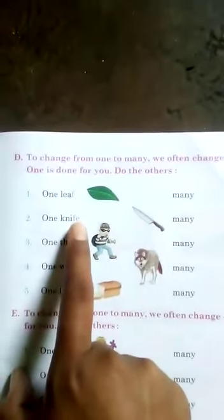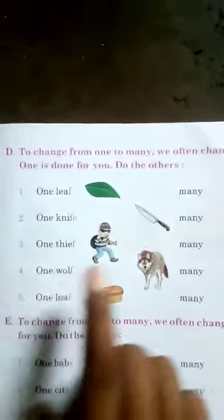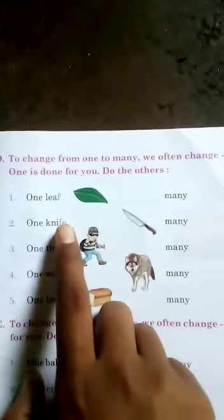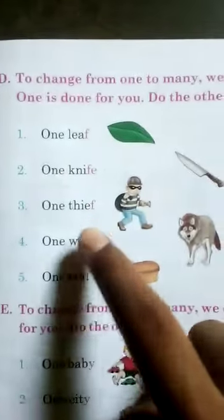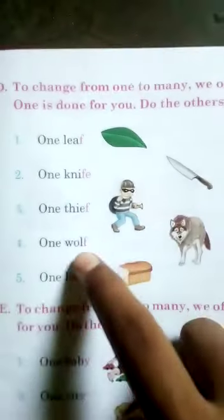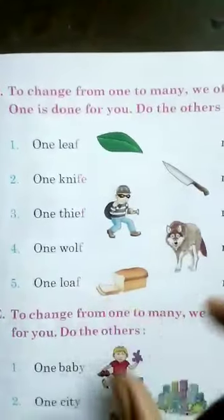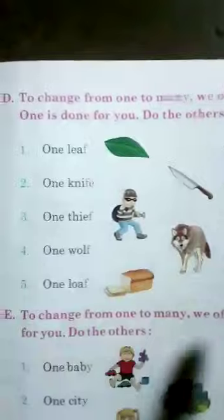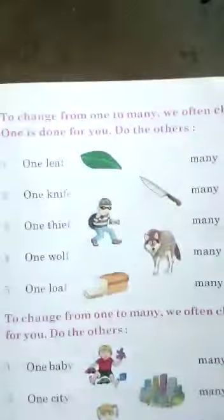The second one is also done for you: one knife. The last letters are FE, so you remove them and add only VES. So it will be K-N-I-VES. You can see those words where the last letter is F — remove it and add VES to change from one to many.